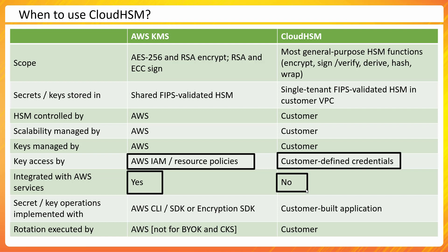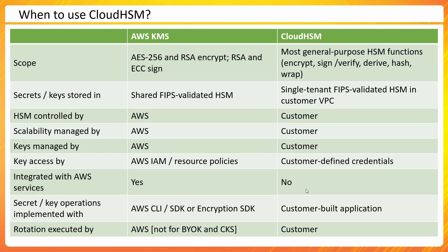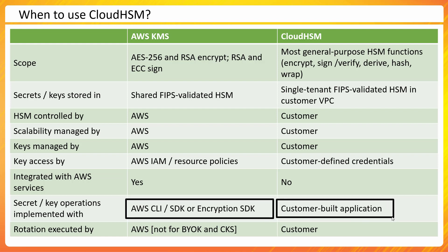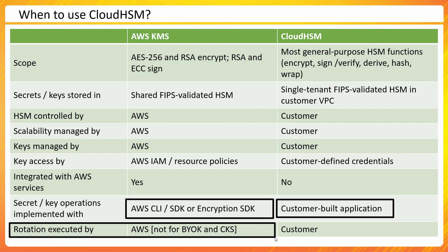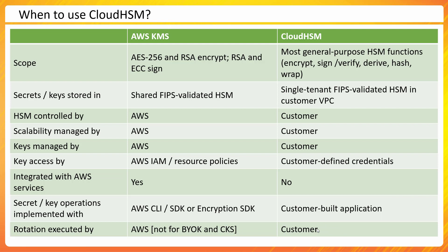AWS KMS integrates with various AWS services like S3 and DynamoDB, whereas Cloud HSM has no native integration — you have to bring your own application to leverage the service. For operations, KMS supports CLI, SDK, or encryption SDK, while for Cloud HSM you must build your own application. Key rotation in KMS is handled by AWS, but in Cloud HSM this responsibility is solely on the customer.